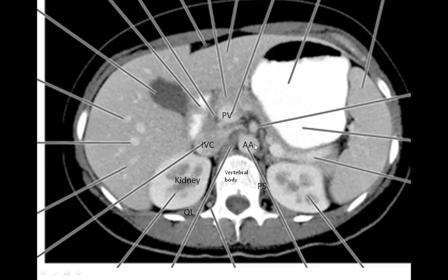The next thing to look for is the retroperitoneal organs. As we've already labelled here, we've got the kidneys lateral to the vertebral body. In front of the kidneys we have the pancreas — this organ here, which has the density of fat. The pancreas lies in front of the portal vein and the abdominal aorta, as well as in front of this branch of the abdominal aorta, which is the superior mesenteric artery. The splenic vein is stuck to the back of the pancreas, which you can see here.